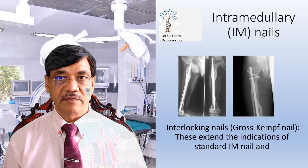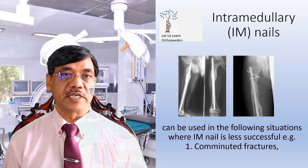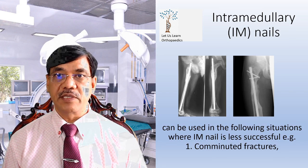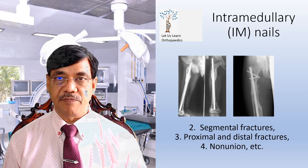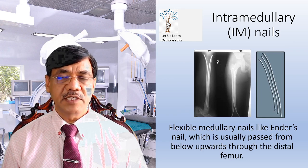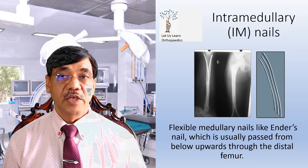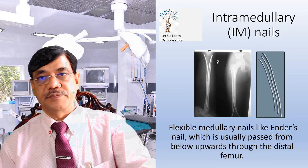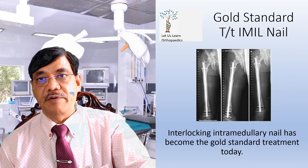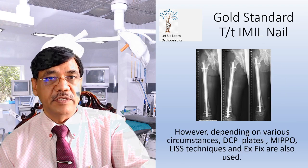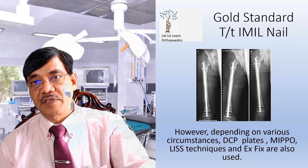Interlocking nails (Grosse-Kempf nails) extend the indication of the standard intramedullary nail and can be used where the standard nail is less successful, for example comminuted fractures, segmental fractures, proximal and distal fractures, and non-unions. Flexible medullary nails like Ender's nails are passed from below upwards through the distal femur. Interlocking intramedullary nail has become the gold standard treatment nowadays. Depending upon various circumstances, DC plates, MIPPO, the LISS technique, or external fixation are also used.